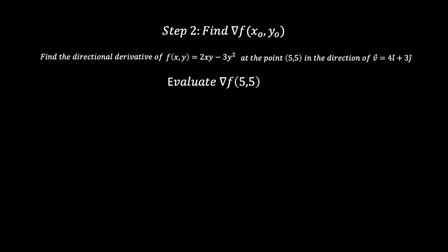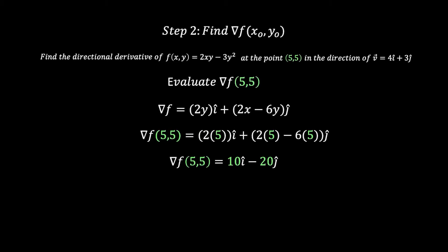Let's move on to step two. In step two we just need to find the value of the gradient at the point (5,5). This is the easy step. We have our point, we just need to simply plug our point into our gradient, and that will give us 10i - 20j.